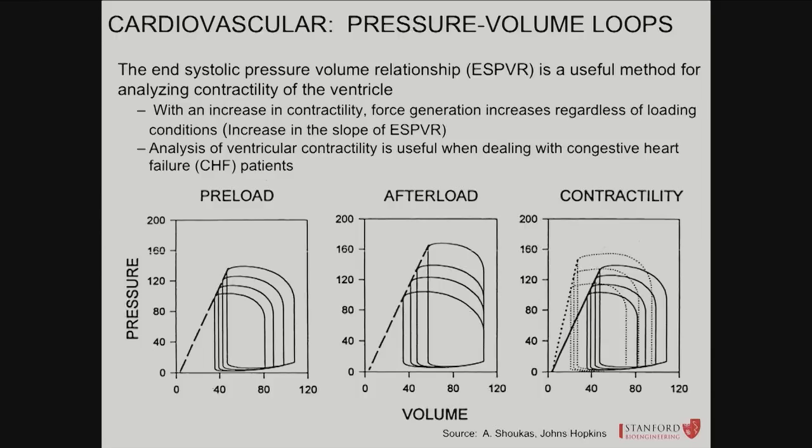In cases of increased preload — when the heart fills more — we already concluded from Frank-Starling that stroke volume goes up. You can see that PV loops get fatter and fatter as end-diastolic volume increases. That's all that's changing.